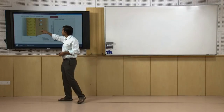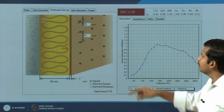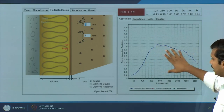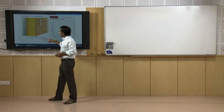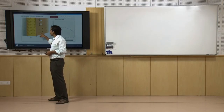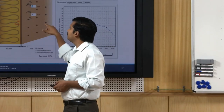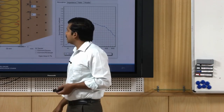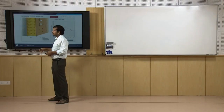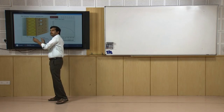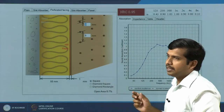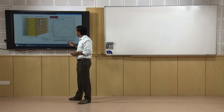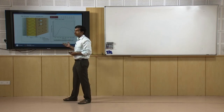Take a look at a perforated facing. The NRC value becomes very good, and you get good absorption in the mid and high frequency range. The critical thing is the diameter of the perforation and the spacing between perforations. For example, 3 mm diameter with center-to-center spacing of 9 mm and 50 mm backing. The moment you adjust these variables — increasing or decreasing the perforation diameter, spacing, or backing — the absorption coefficient and overall performance of the material itself will vary.